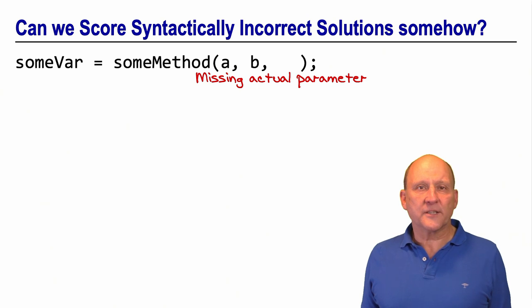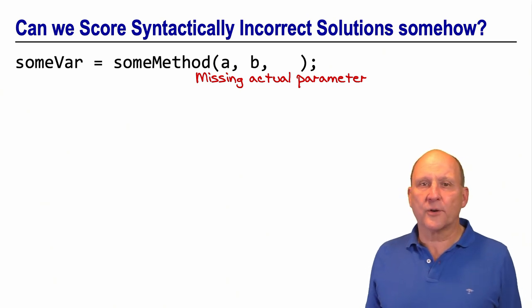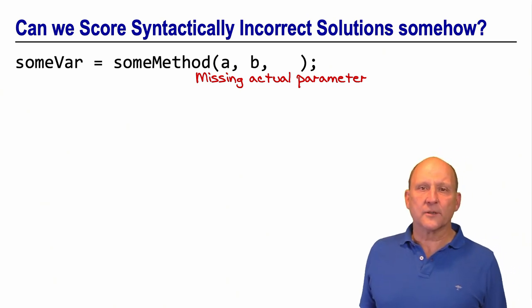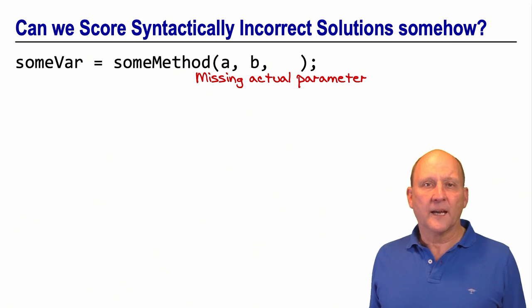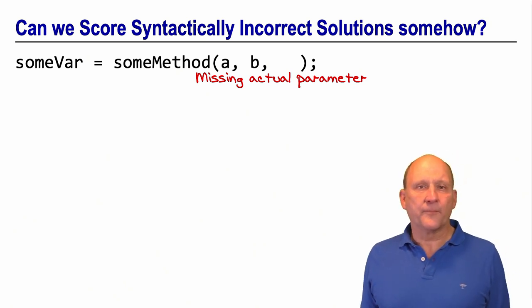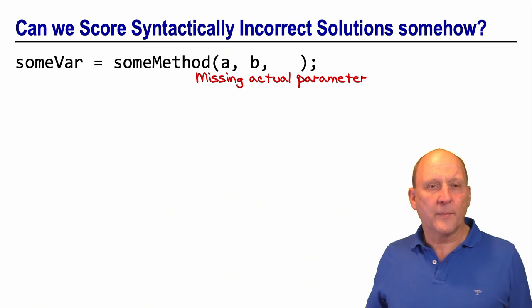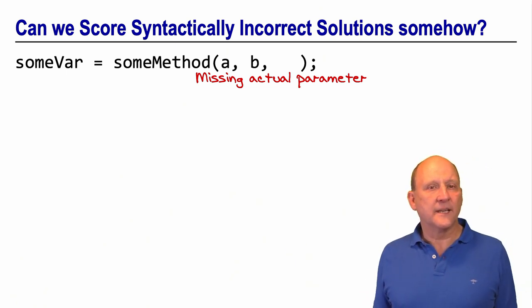We asked the questions to ourselves, can we score syntactical incorrect solutions somehow? And the short answer to this question is no. The long answer may be seen in this example. Here is a missing actual parameter, and to score the solution, you had to fix it.